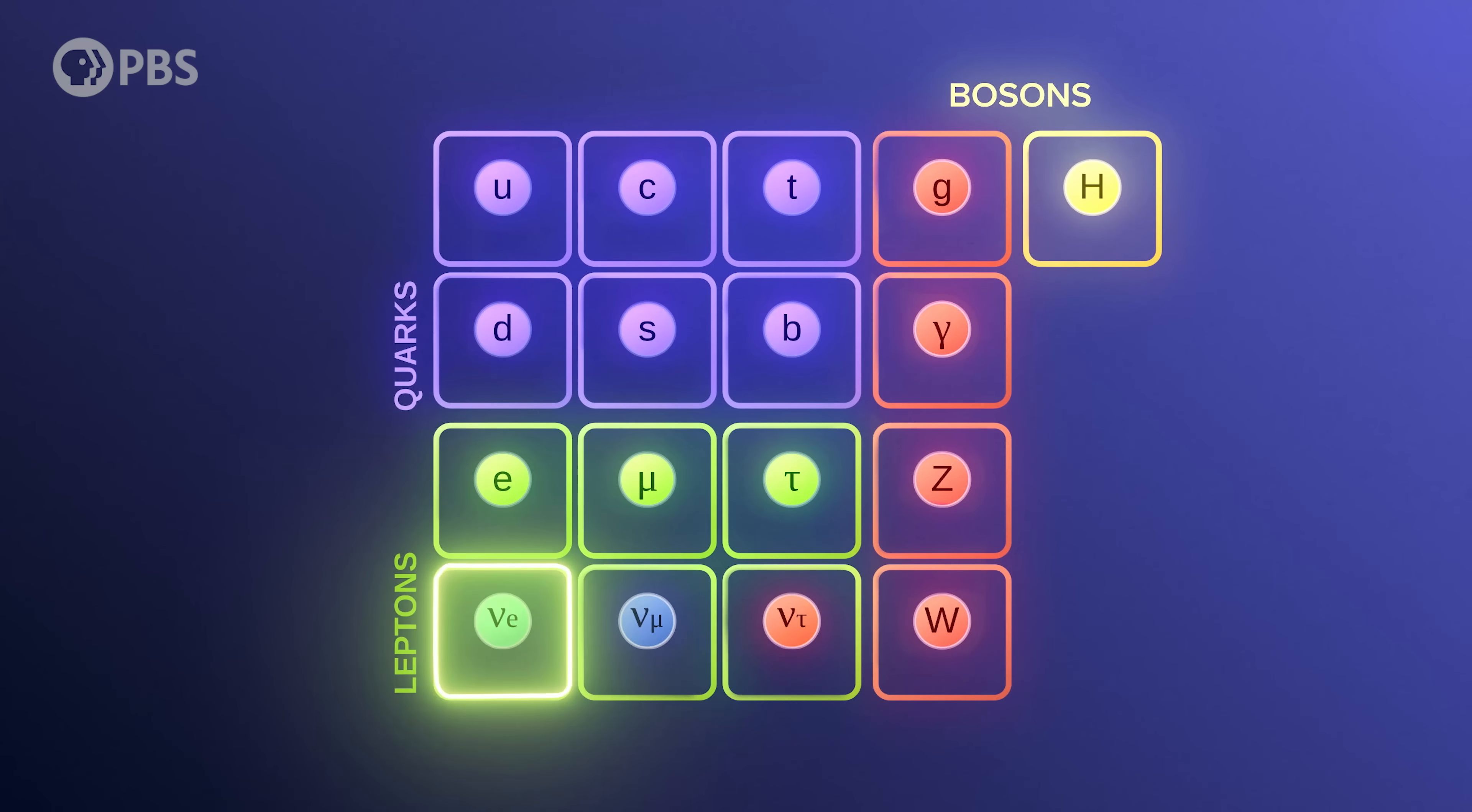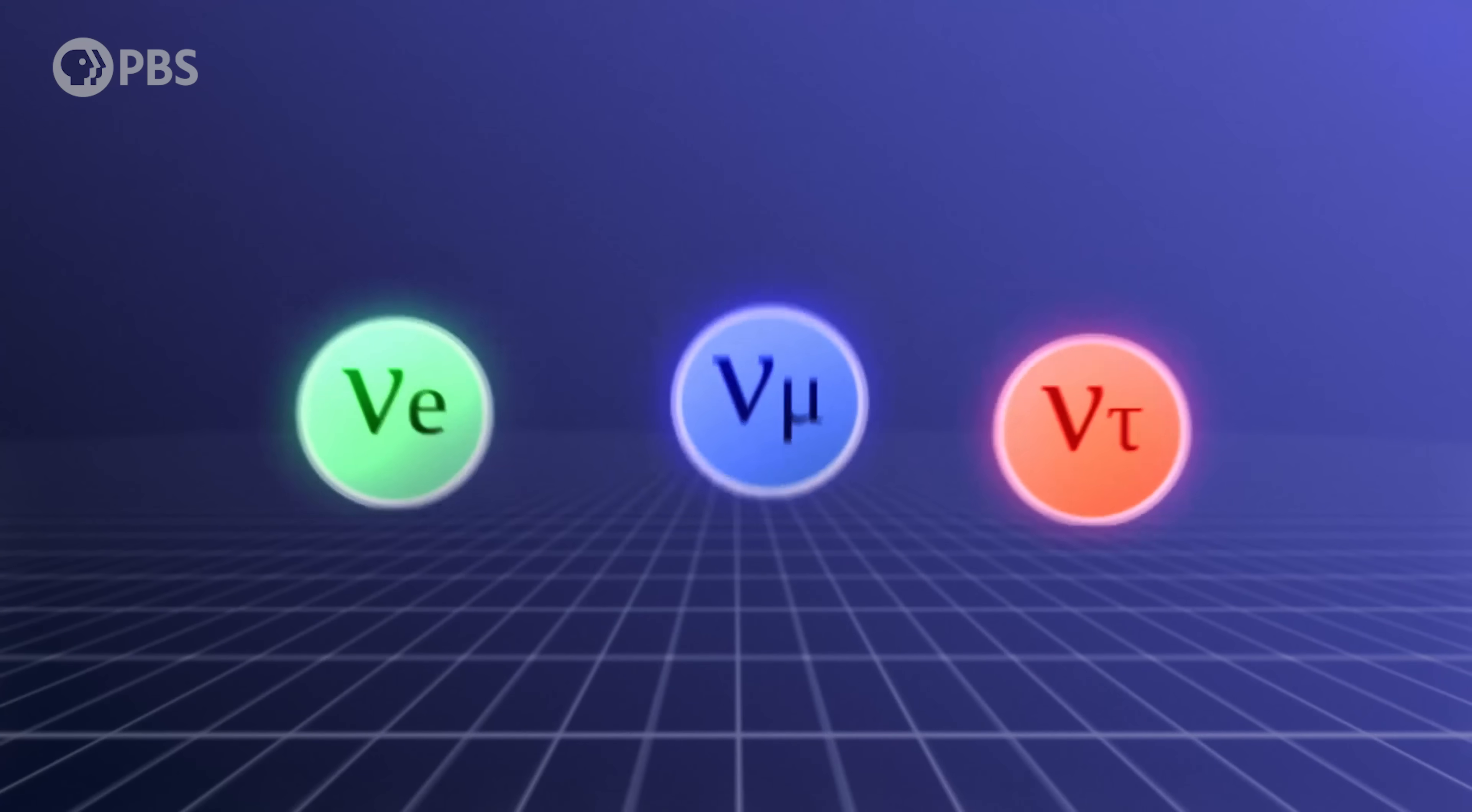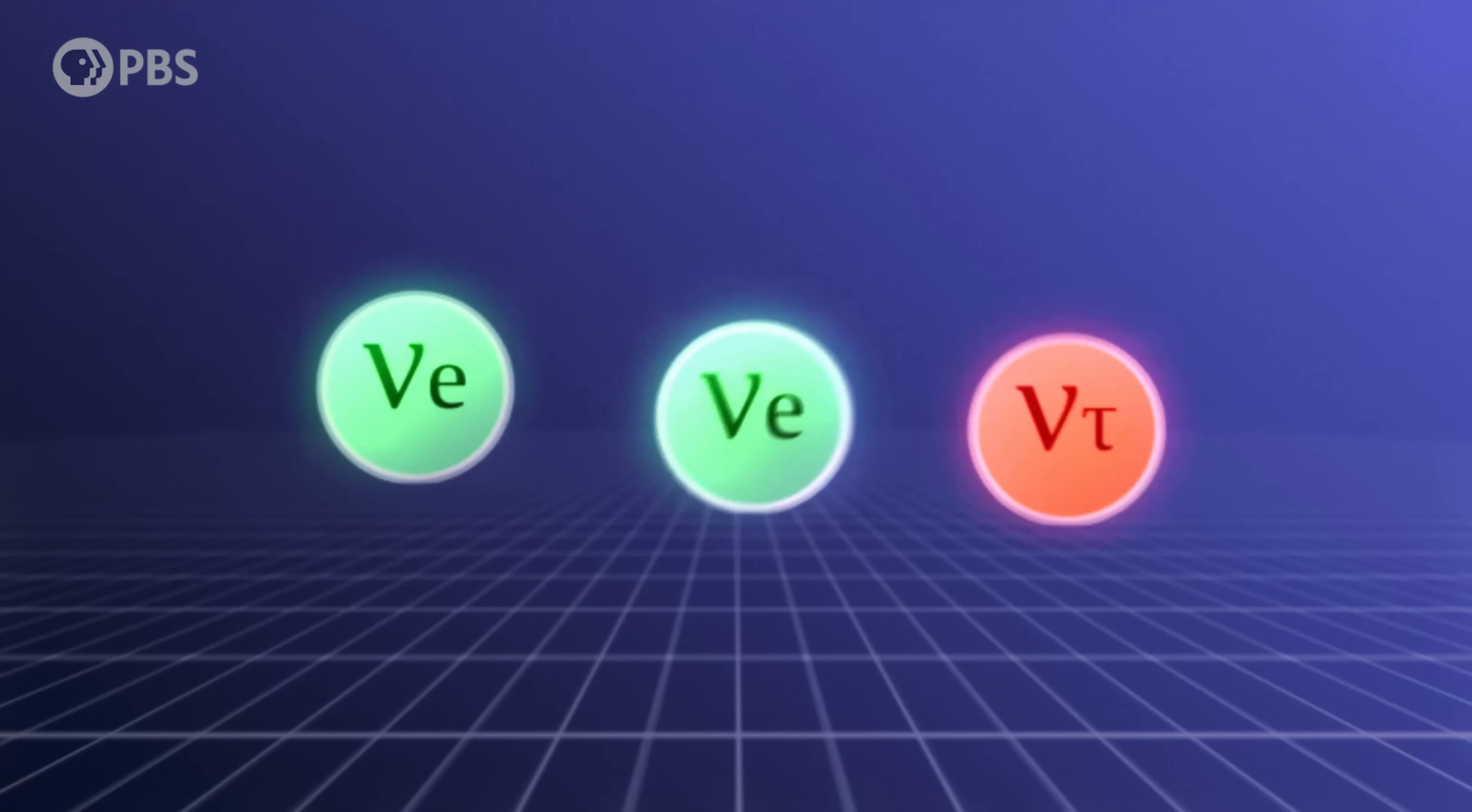So we have the electron neutrino, muon neutrino, and tau neutrino. But all neutrinos have the bizarre quality that they oscillate between these types over time.